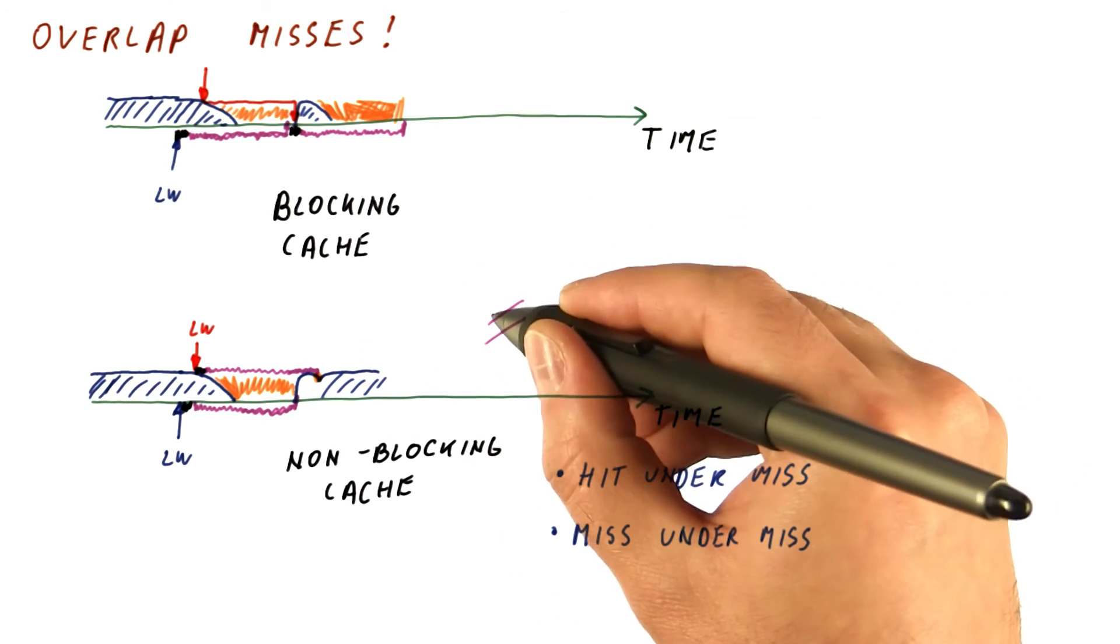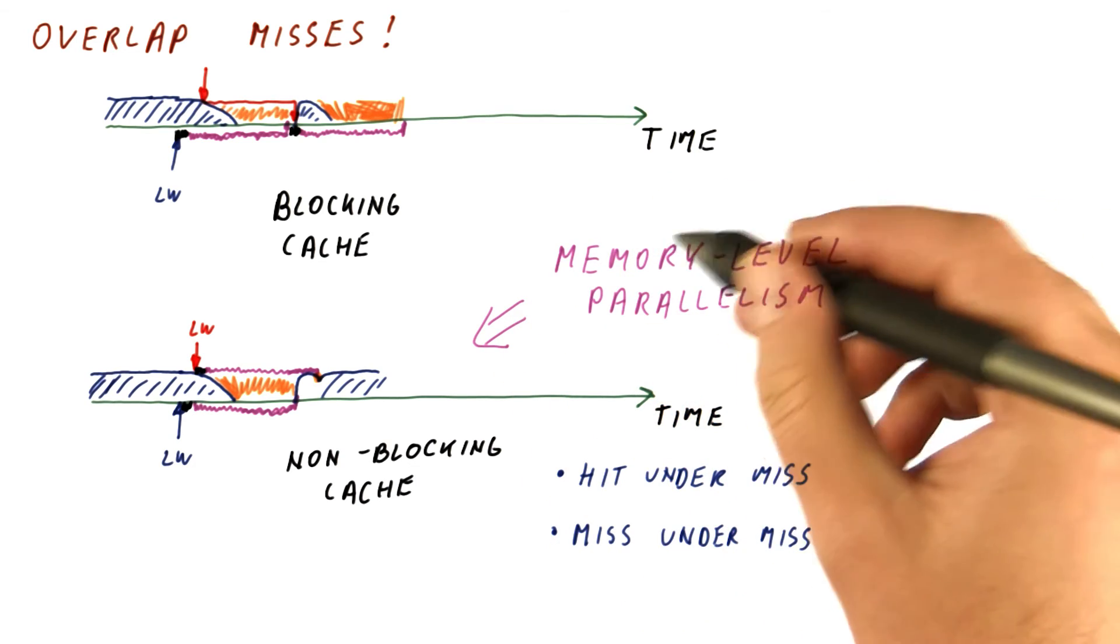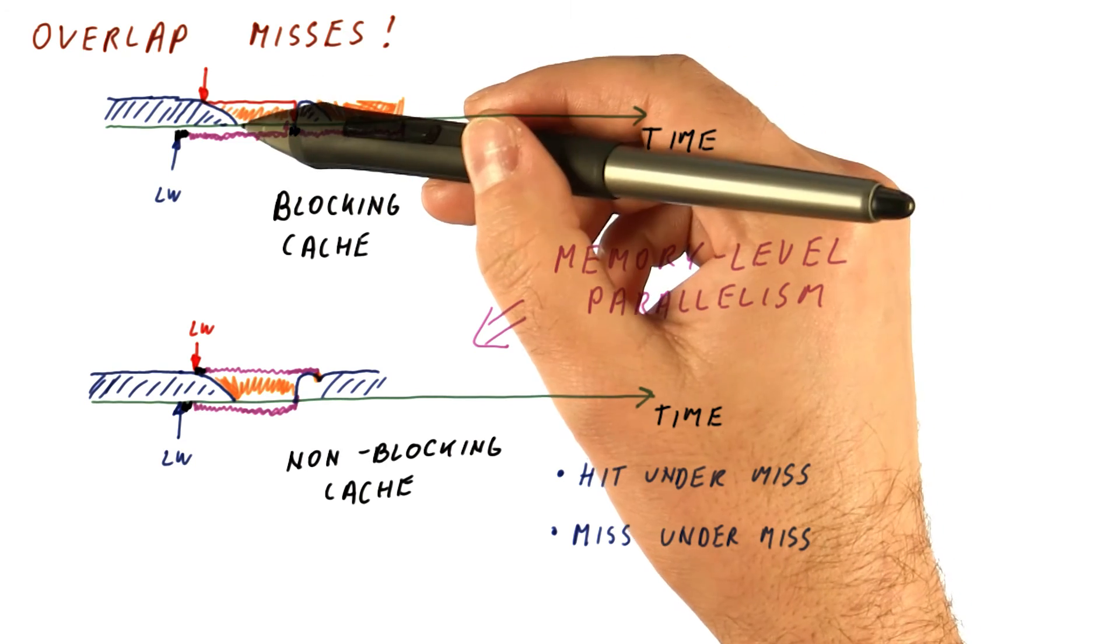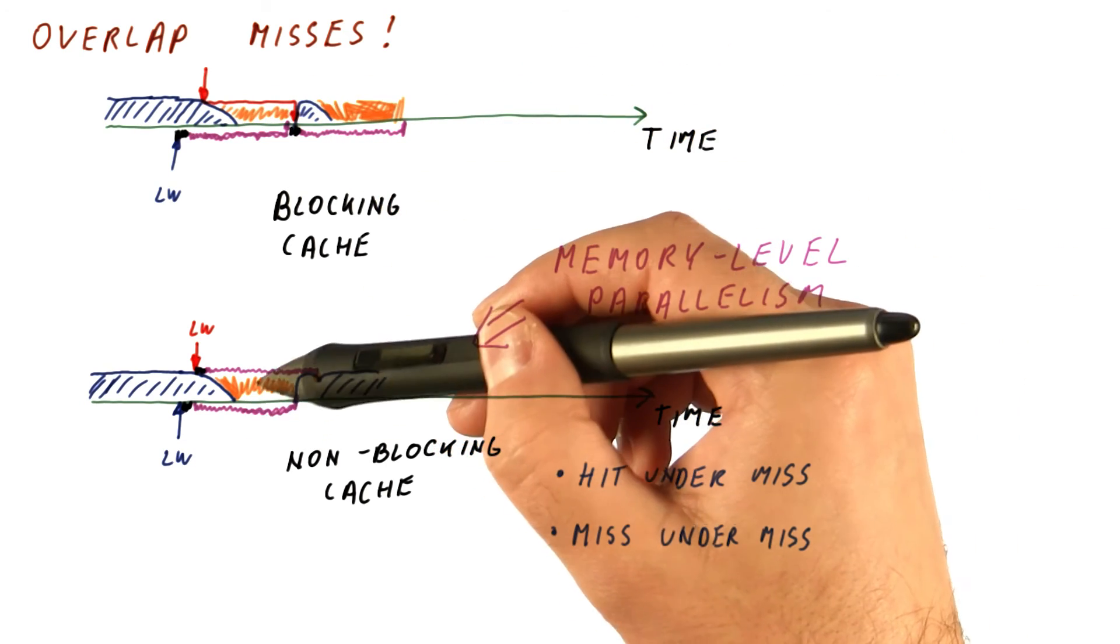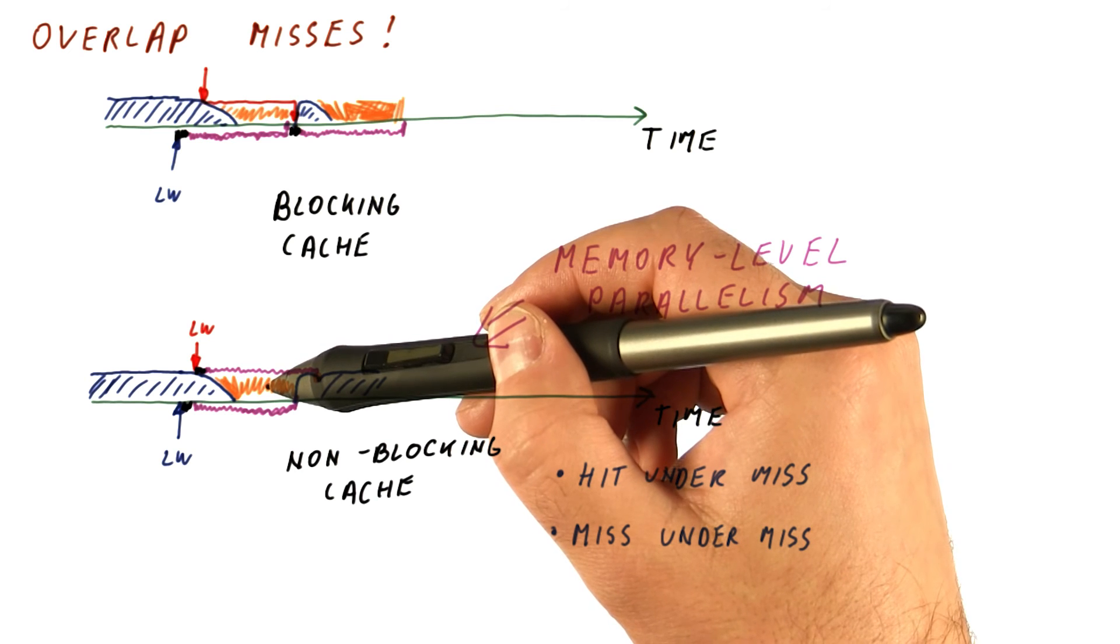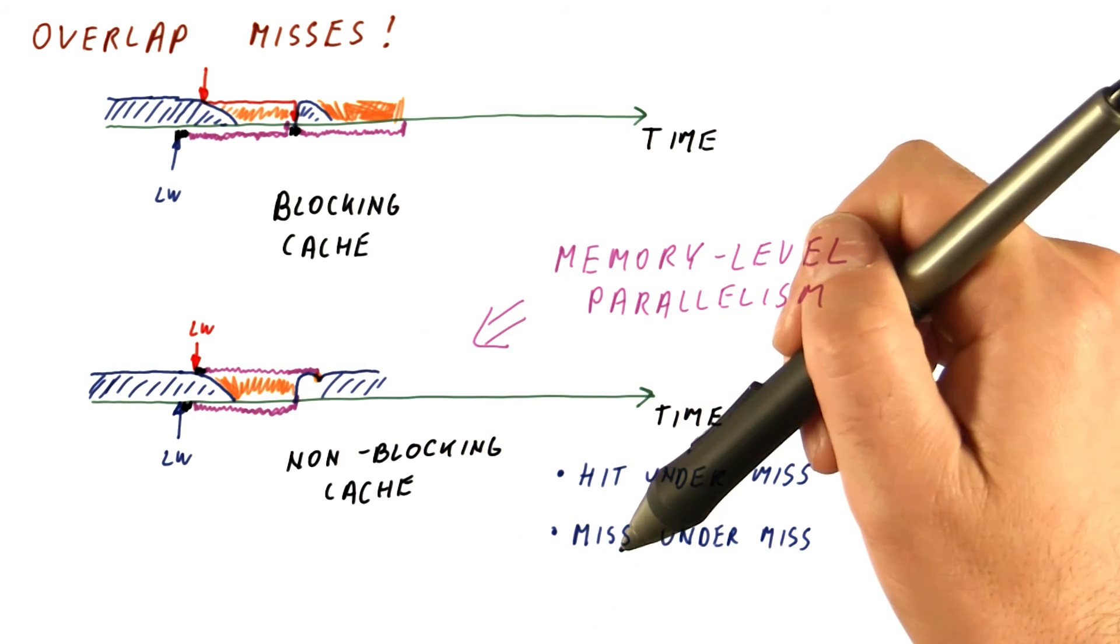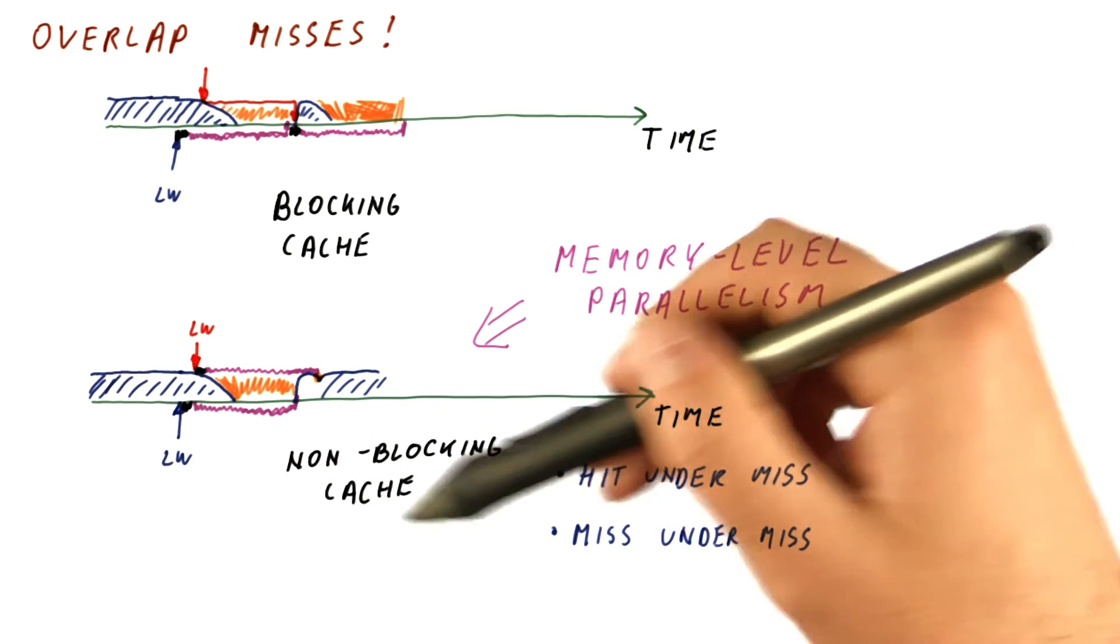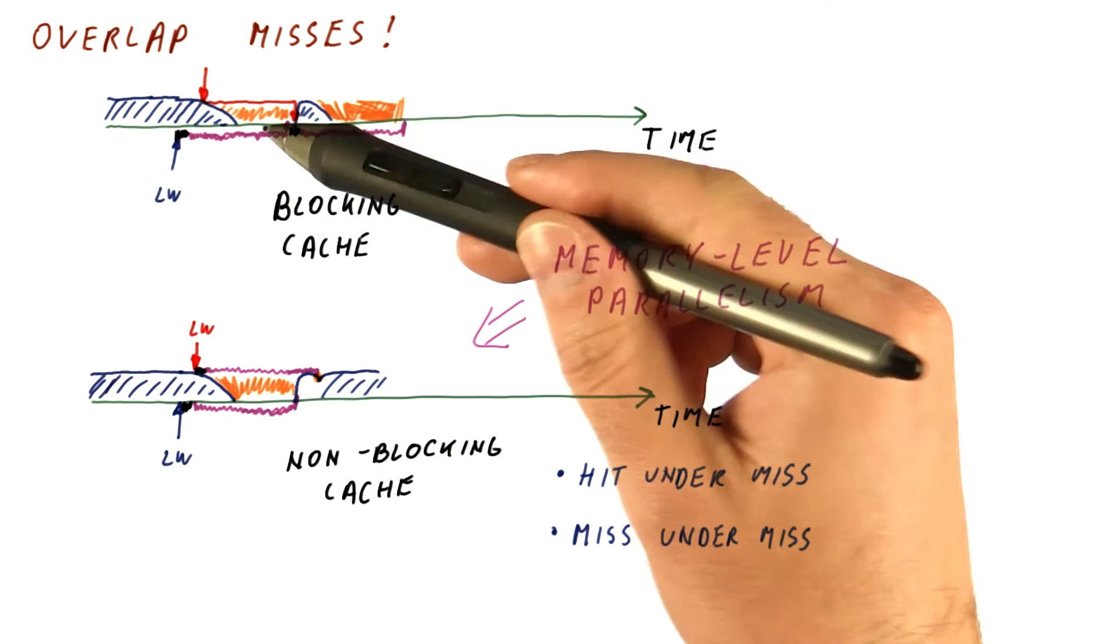The property that the processor is exploiting here is called memory level parallelism. Here the memory never gets more than one access at a time. Here the memory gets accesses to process them in parallel. So of course our memory needs to be able to do this. But if it can, then a non-blocking cache that can do miss under miss can dramatically cut down on the cost of misses.